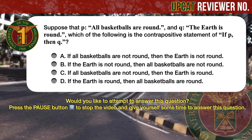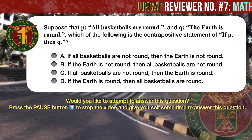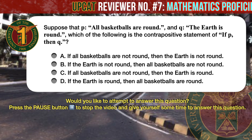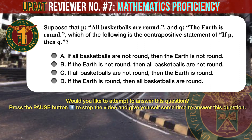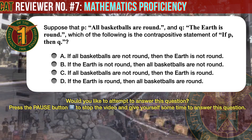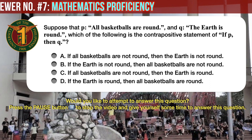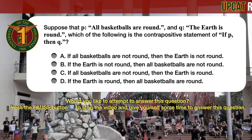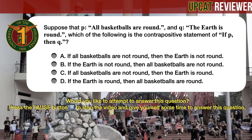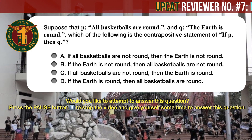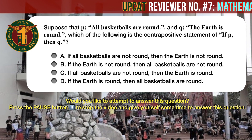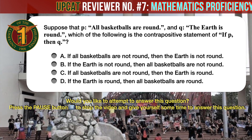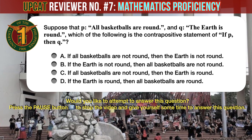Question number 1. Suppose that the hypothesis P is: all basketballs are round, and the conclusion Q is: the earth is round. Which of the following is the contrapositive statement of 'if P, then Q'? A: If all basketballs are not round, then the earth is not round. B: If the earth is not round, then all basketballs are not round. C: If all basketballs are not round, then the earth is round. D: If the earth is round, then all basketballs are round.